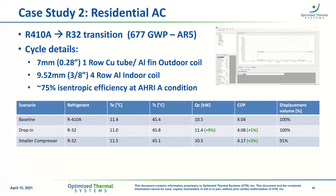This next question is also about case study two: did you keep the same system subcooling and superheat? And if not, how are those defined in this analysis? Yes, these are both using the same subcooling and superheat. There's an argument that the R32 cycle would see a lower superheat to keep discharge temperature down, and there may be some other differences. But just for the sake of the simplest cycle comparison, we're using five degrees subcooling and superheat for all cycles here, to keep everything clean.